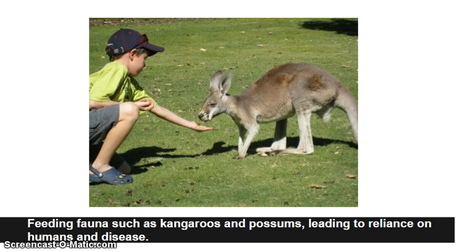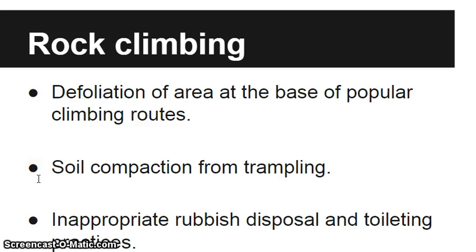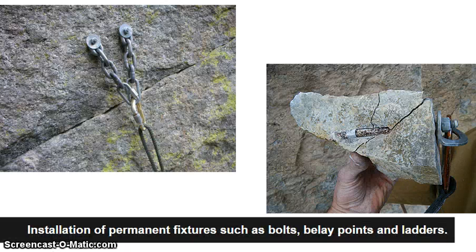Because our food is so heavily processed, we introduce diseases and other nasties that animals can't really handle. Our last category is rock climbing as a case study. Some of the impacts include the removal of plants at the base of the climb, compaction of the soil from people repeatedly using that one spot, rubbish disposal, and the permanent features people install such as bolts and belay points and the impact that they have.